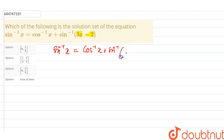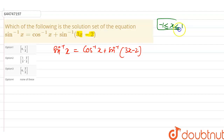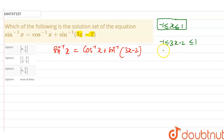First, we have to find the value of x that lies in the domain of this function. For the existence of this equation, the domain of cos⁻¹ is between minus 1 to 1. For sin⁻¹(3x - 2), the argument 3x - 2 must also lie between minus 1 to 1. Taking minus 2 to the other side gives plus 2, so we get 1 ≤ 3x ≤ 3.